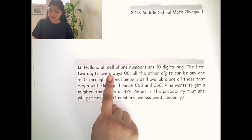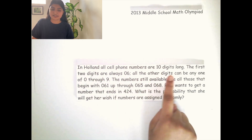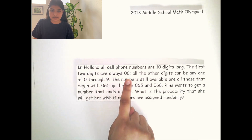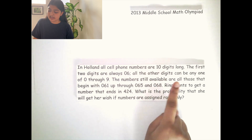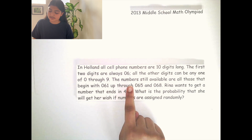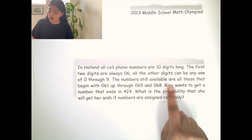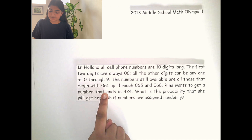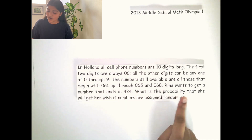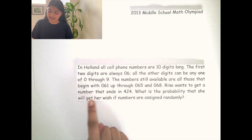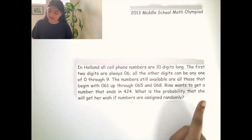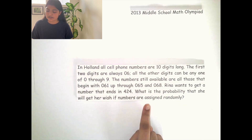In Holland, all cell phone numbers are 10 digits long. The first two digits are always 06, and all other digits can be any one of 0 through 9. The numbers still available are all those that begin with 061 up through 065 and 068. Rena wants to get a number that ends in 424. What is the probability that she will get her wish if numbers are assigned randomly?